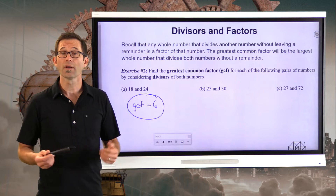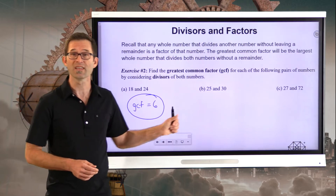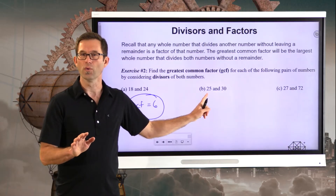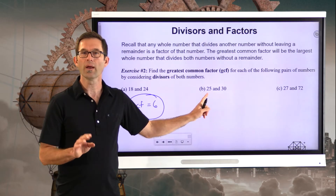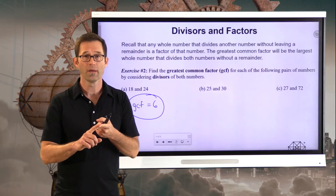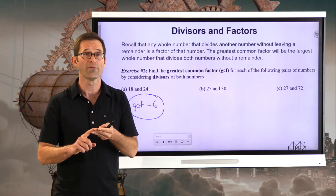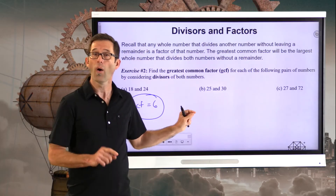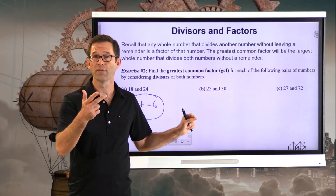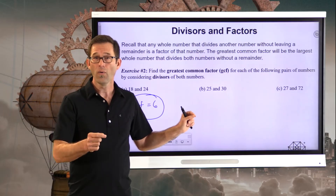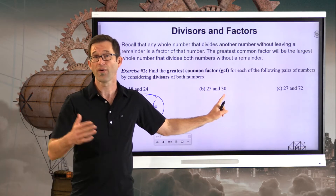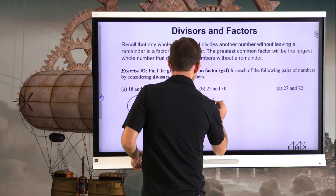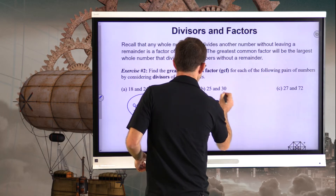In letter B, even though 30 has quite a few factors, 25 has very few. The only numbers that divide nicely into 25 are 1, 5, and 25. Of those, only 1 and 5 divide into 30, with 5 obviously being the greatest. So the GCF in this case is equal to 5.